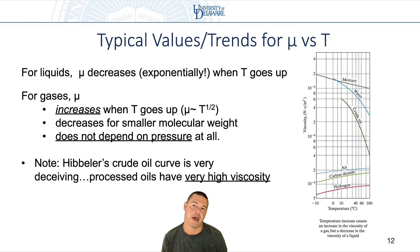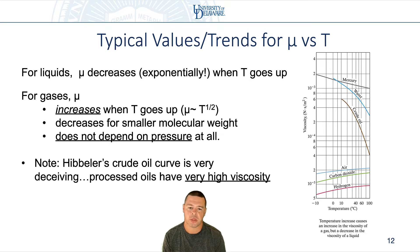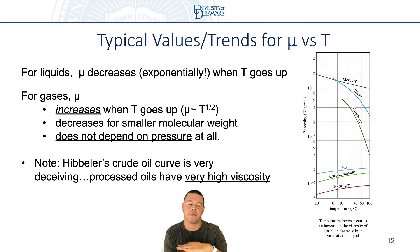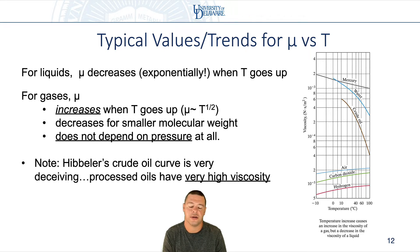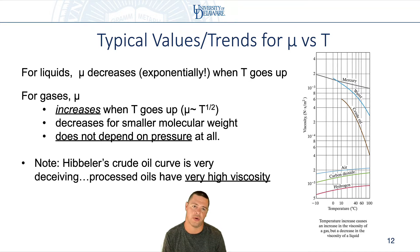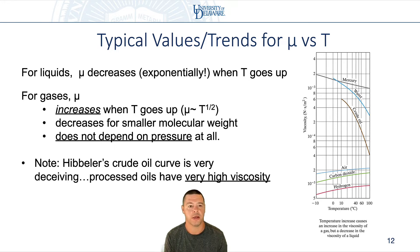Let's take a look at some typical values and trends for viscosity for different types of fluids as a function of temperature. Starting with liquids — if I think about resistance to flow as a surrogate for viscosity, things with high viscosity are things that don't flow very much. Liquids tend to have a much higher viscosity than gases, several orders of magnitude at room temperature.